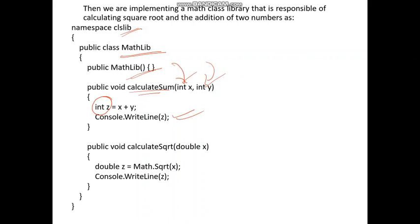The second function is 'CalculateSqrt', which takes a double x as its argument. Inside the function, we store the result in another variable z of type double, using Math.Sqrt — the inbuilt function of the math library — passing x as the argument. After calculating the square root, we print the value of z to the console using Console.WriteLine.